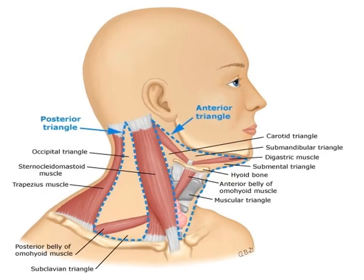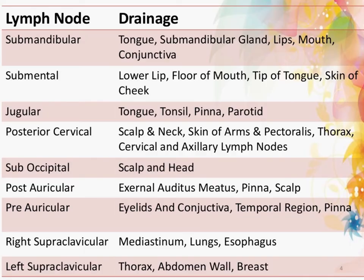Anatomically, we can divide the cervical groups of lymph nodes into two main triangles: the anterior triangle, anterior to the sternocleidomastoid, and the posterior triangle, posterior to the sternocleidomastoid muscle. And here we have the drainage of all the cervical lymph nodes.